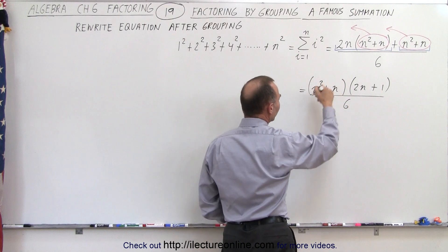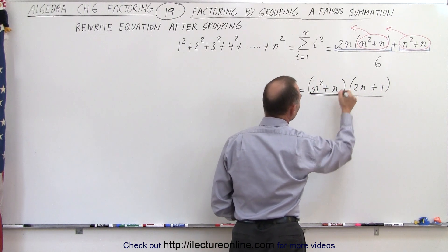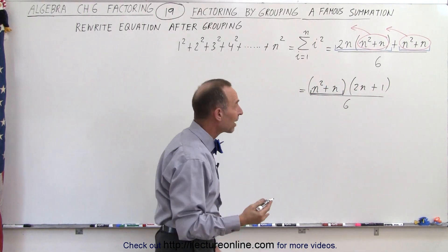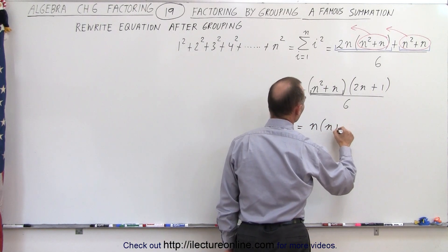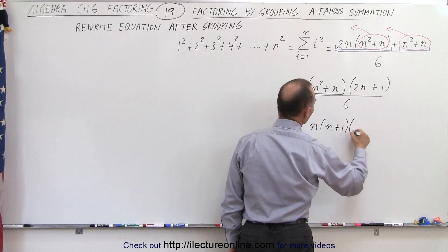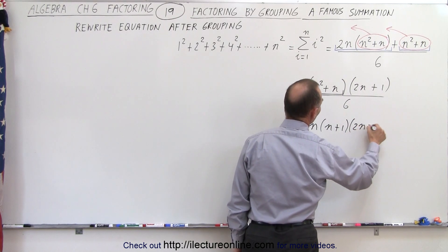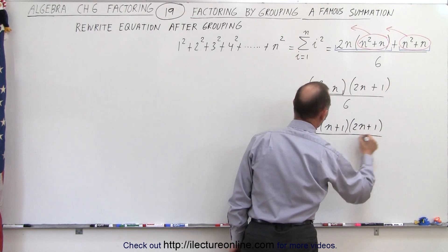And then I can look at this first term right here, the n squared plus n. I can also factor out an n. So this can now be written as n times n plus 1 multiplied times 2n plus 1, all divided by 6.